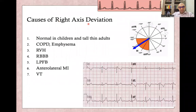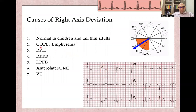What are the causes of right axis deviation? It can be normal in children or tall, thin adults. It can also be seen in COPD or emphysema patients, right ventricular hypertrophy, right bundle branch block, left posterior fascicular block, anterolateral myocardial infarction, and ventricular tachycardia.